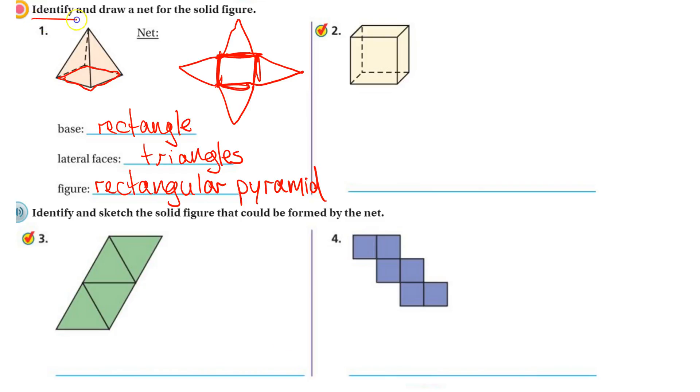So identify and draw. This would be a cube, or we can call it a rectangular prism. It's got rectangles for its bases, no triangles for its lateral faces. So it has to have those triangles if it's a pyramid. Cube or rectangular prism.